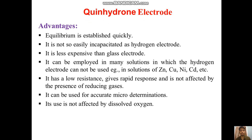The advantages of using the quinhydrone electrode are: equilibrium is stabilized quickly; it is not as easily incapacitated as the hydrogen electrode; it is less expensive than a glass electrode; and it can be employed in many solutions in which the hydrogen electrode cannot be used, such as zinc solutions and copper solutions.